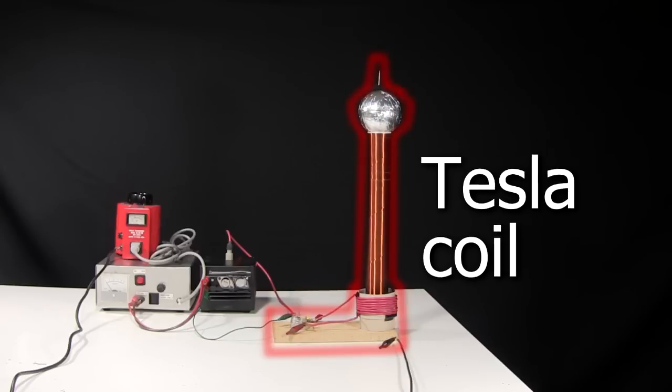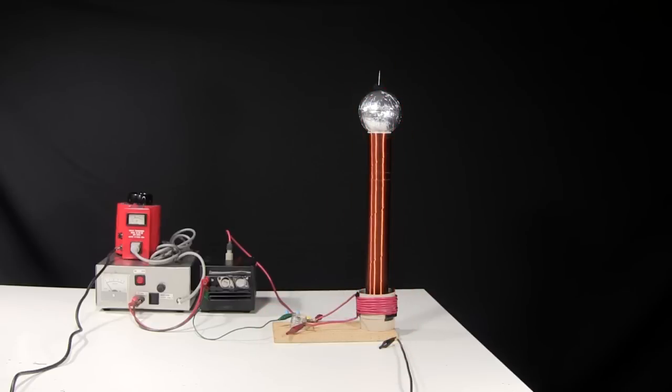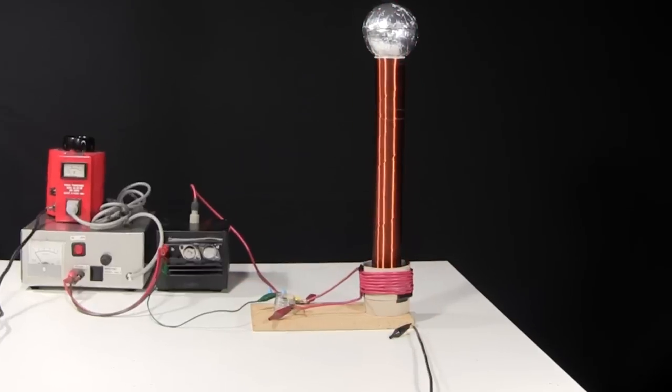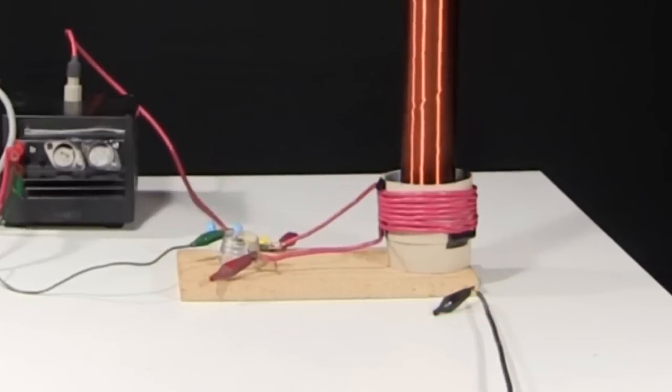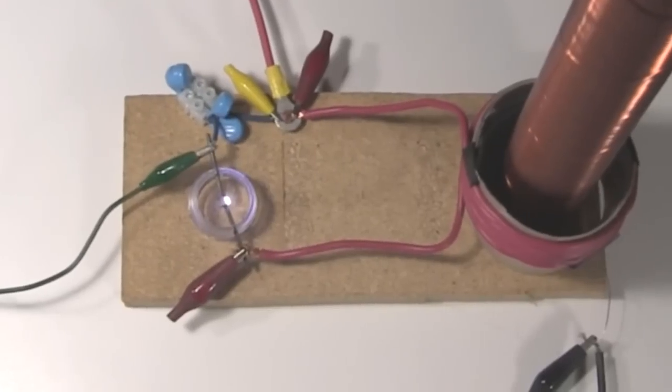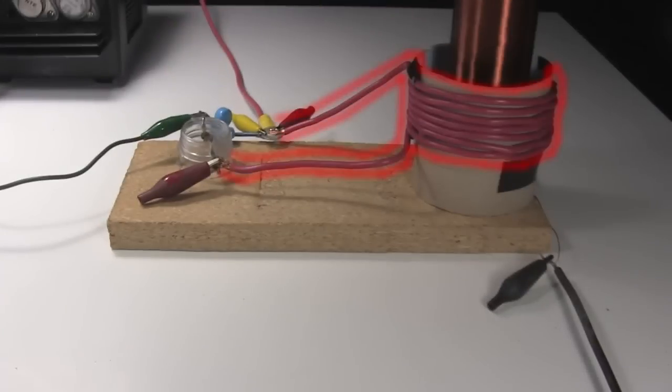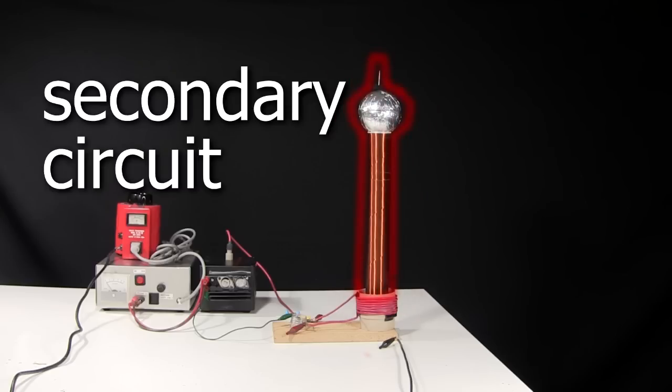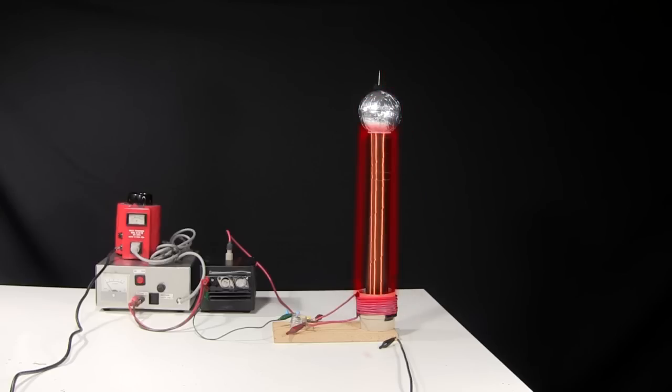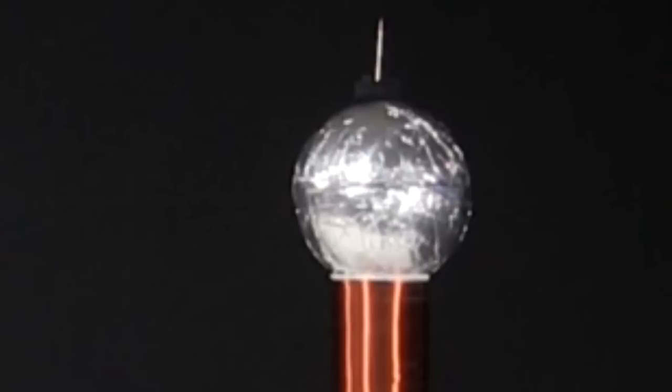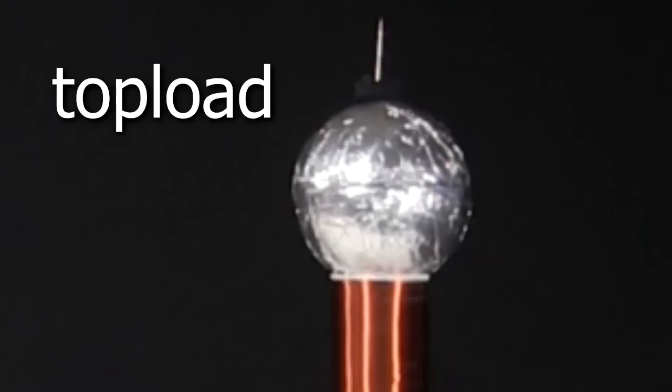The rest is fairly easy to make, and consists of two resonant circuits. The first is called the primary circuit, and consists of these capacitors, this spark gap, and this primary coil. The second is called the secondary circuit, and is just this much taller coil, and this ball on top covered in aluminum foil, which is called a top load.